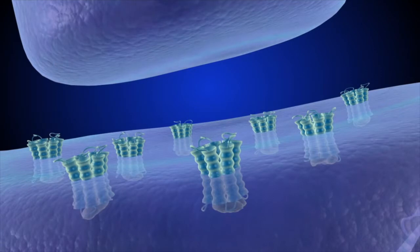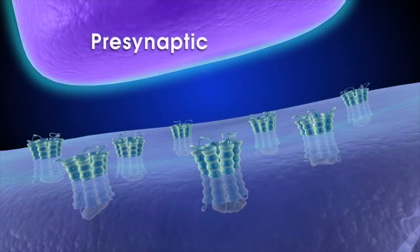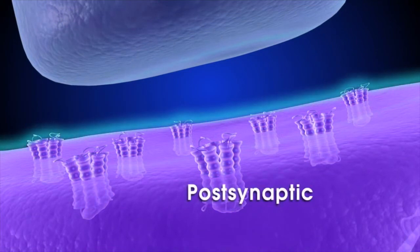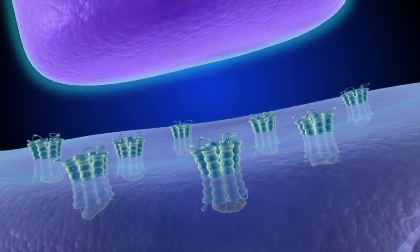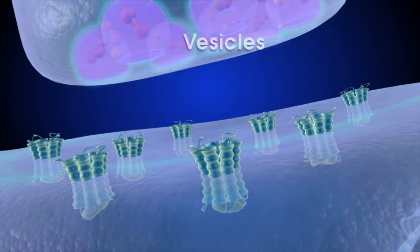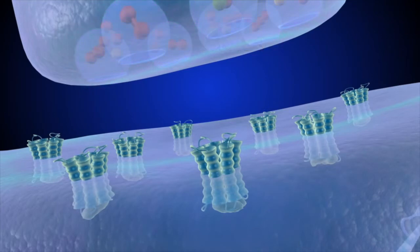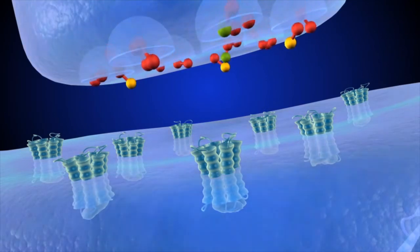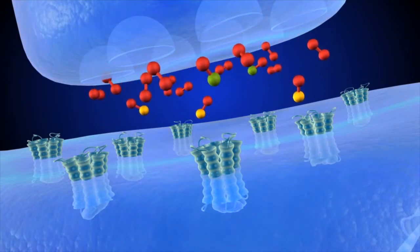The small gap between the sending and receiving cells is called the synapse. The cell sending the message is pre-synaptic. The receiving cell, post-synaptic. In the pre-synaptic cell, the electrical signal causes changes. Some packets or vesicles that store neurotransmitter migrate to the cell membrane, merge with it, open up, and release neurotransmitter molecules into the synapse.